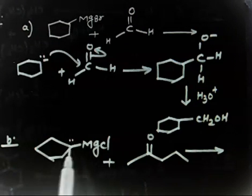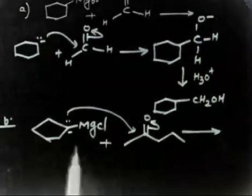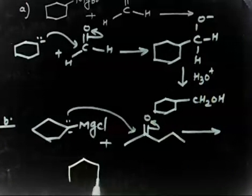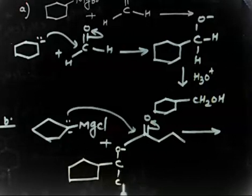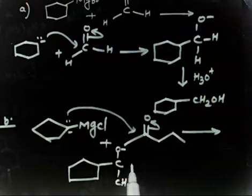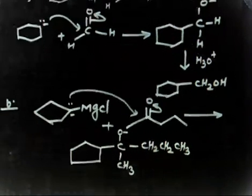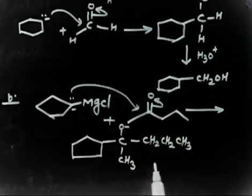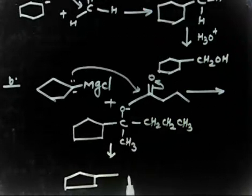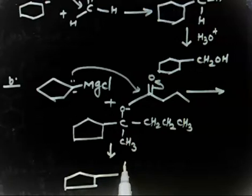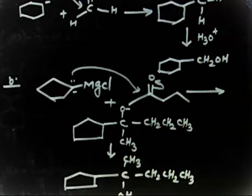In this case again, you have a carbanion with a minus charge. This will attack on the carbonyl carbon and the ring opens up. You will get a 5-membered ring. So let's make a 5-membered ring with C-O minus, a CH₃ group, and a chain of 1, 2, 3 carbons — CH₂, CH₂, CH₃.